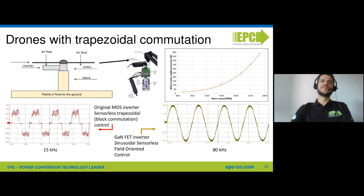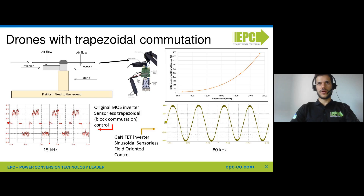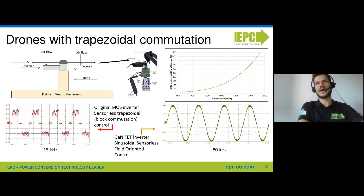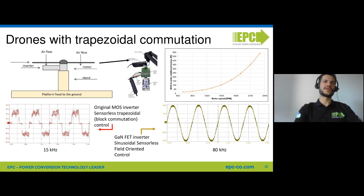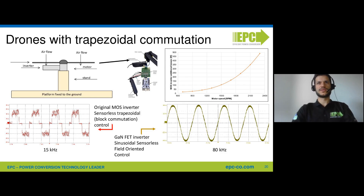It required more electrical power to deliver the same mechanical power to the propeller in the case of the MOSFET inverter. The difference in required input power is shown on the graph: the X axis is motor speed, the Y axis is the extra power required by the MOSFET inverter. Above 2000 RPM, where delivered power is around 2 to 3 kW, the power reduction is approximately 500 W — close to a 20% efficiency improvement in the case of the gallium nitride inverter.